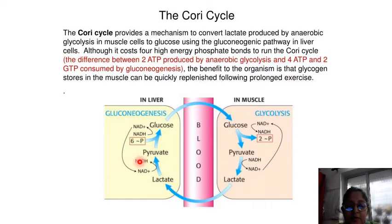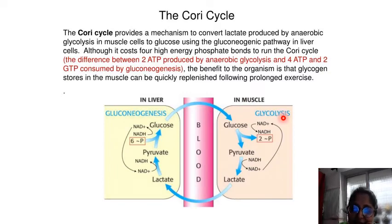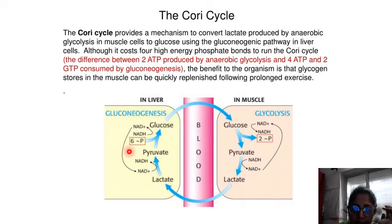Overall, the liver process in the Cori Cycle is gluconeogenesis, where lactate is converted to pyruvate using NAD+/NADH, then converted to glucose using 6 ATP. That glucose is taken up by the muscle, where glycolysis releases 2 ATP. So the net consumption is 6 minus 2, equaling 4 ATP molecules. This net consumption of ATP in the Cori Cycle shifts the metabolic burden from the muscle to the liver, providing a mechanism to convert lactate produced by anaerobic glycolysis in the muscle to glucose in liver cells.